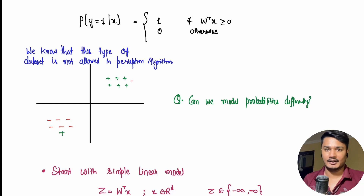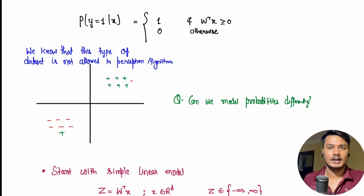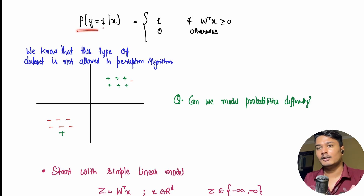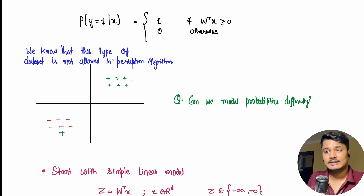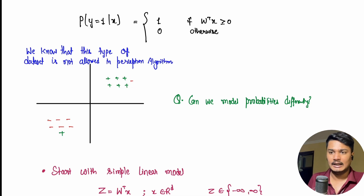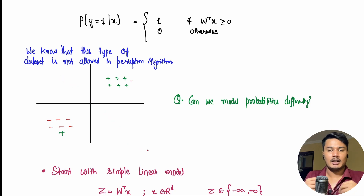In this video we will discuss logistic regression. We will take the idea from the perceptron algorithm and head towards logistic regression. Our previous model was: p(y=1|x) = 1 if w^T x > 0, and 0 otherwise. This type of dataset is not allowed in the perceptron algorithm — for instance, a dataset that is not linearly separable, with mixed positive and negative points, is not handled by the perceptron.